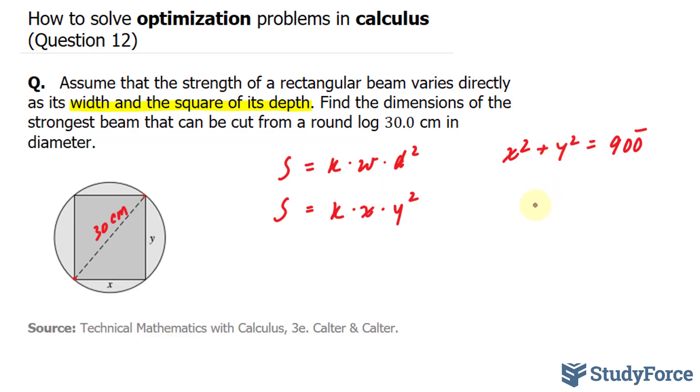So if I rearrange this formula, I end up with 900 minus x squared is my depth. So this will be replaced with that, giving us s is equal to k times x times 900 minus x squared.